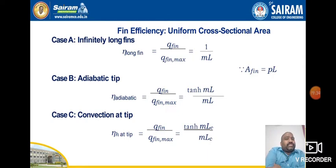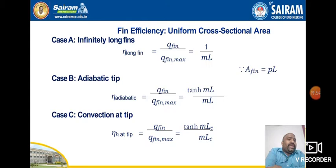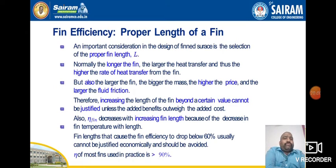For fin efficiency of uniform cross-section fins: for a long fin, ηf = 1/(mL); for an adiabatic tip, ηf = tanh(mL)/(mL), where L is the characteristic length. Charts showing efficiency for rectangular, triangular, and parabolic fin profiles are available in the heat transfer data handbook for reference in solving numerical problems.